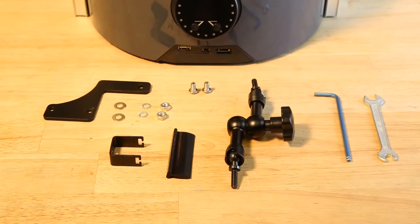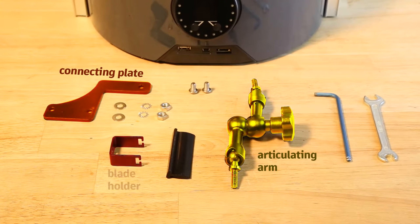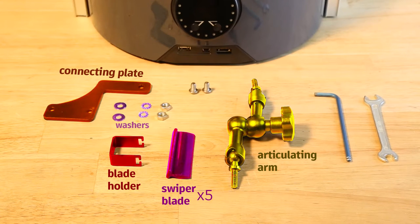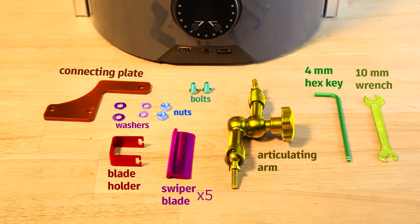The swiper mechanism comes with these parts: an articulating arm, a connecting plate, a u-shaped blade holder, a swiper blade times five, washers, nuts, and bolts. You will need your own 4 millimeter hex key and a 10 millimeter wrench. You will also need an Ember.